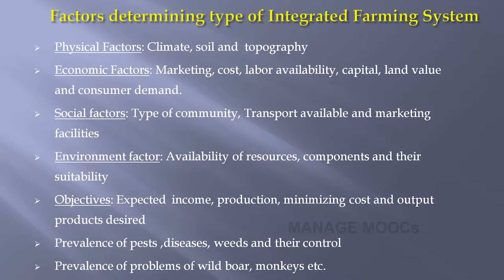There are different factors such as physical factor, economic factor, social factor, environmental factor, and also as per the objective we can suggest the different type of integrated farming system. Similarly, the prevalence of pests and the problem of wild boar and monkeys also sometimes decides the type of IFS. In physical factors, climate, soil, and topography are major components that need to be considered before adoption of integrated farming system.